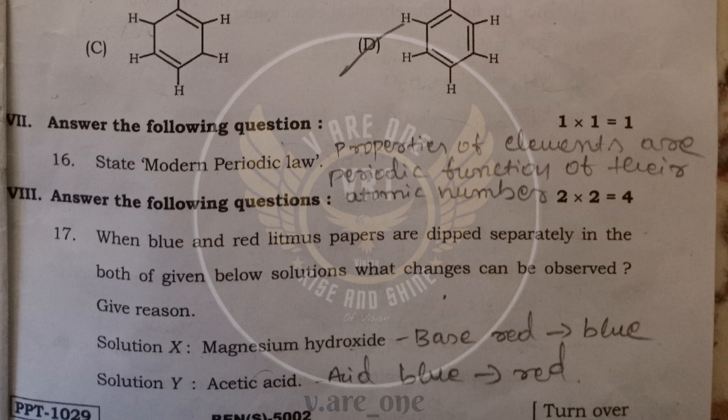In the 17th question, when a blue and red litmus paper are dipped separately in both of given solution, what changes can be observed? Give reason. Solution X, it is having magnesium hydroxide. It is a base. So, the red litmus paper shows the blue color. It turns to blue color. And if you dip the blue color, it means it remains blue color only. Solution Y is acetic acid. It is acid. So, blue color litmus paper turns to red color. If you dip red color litmus paper, it remains same.